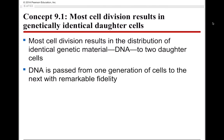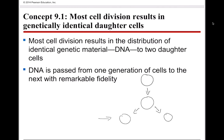Cellular division results in genetically identical daughter cells — this is something really important. Most cellular division results in the distribution of identical genetic material, or DNA, into two daughter cells. DNA is passed from one generation of cells to the next. You take one cell, split it into two, and your two resulting daughter cells are going to be genetically identical to each other and to the original.